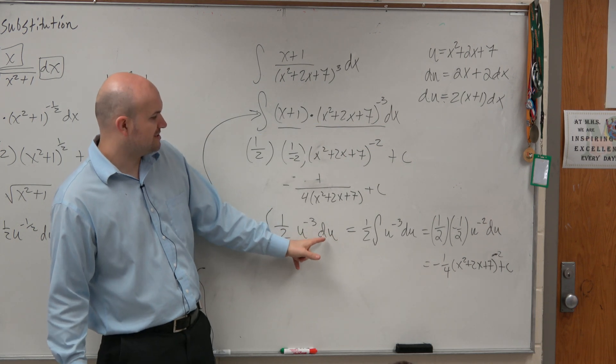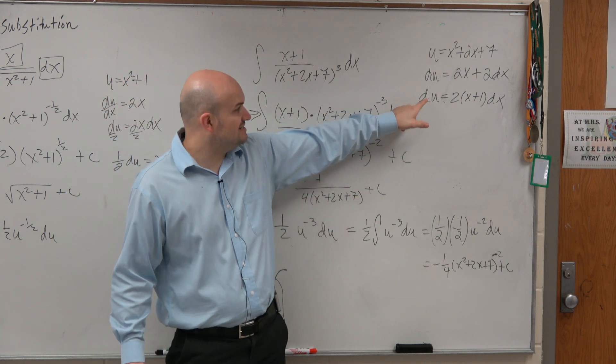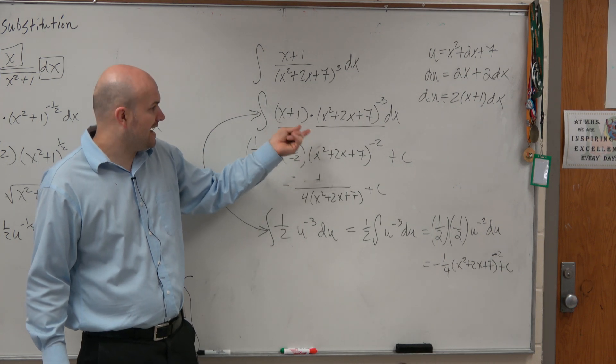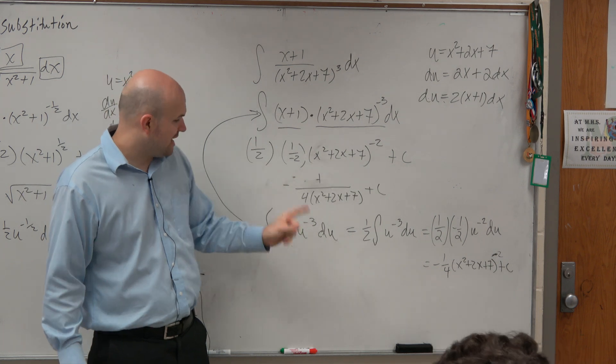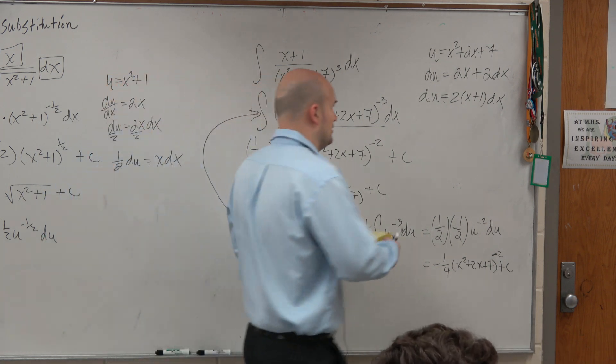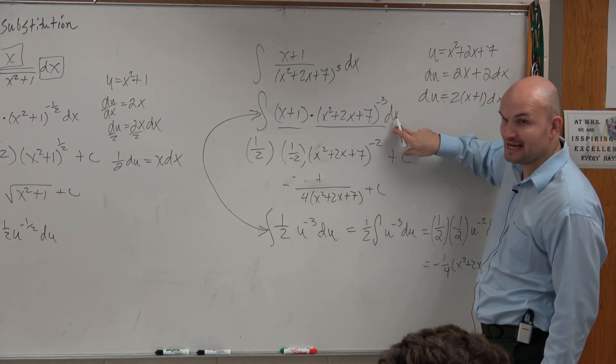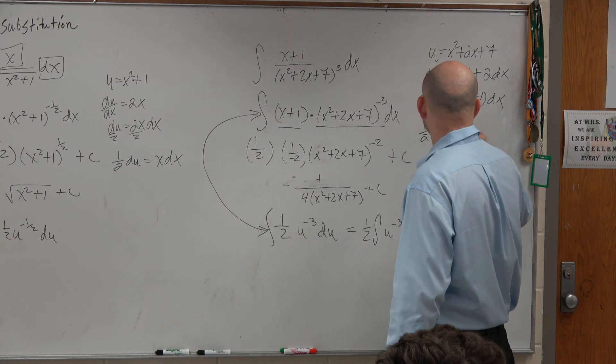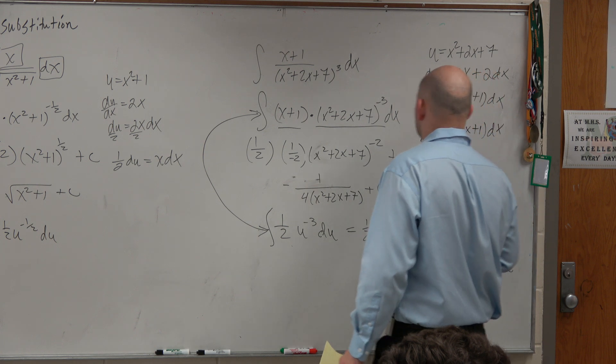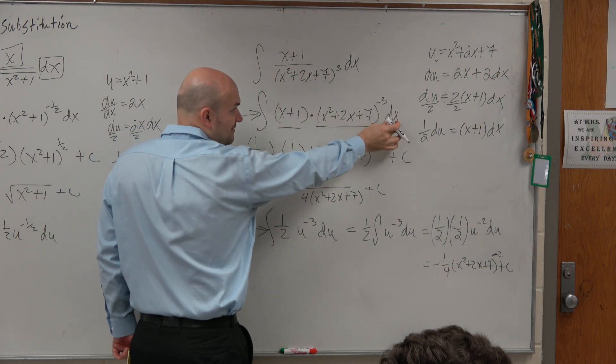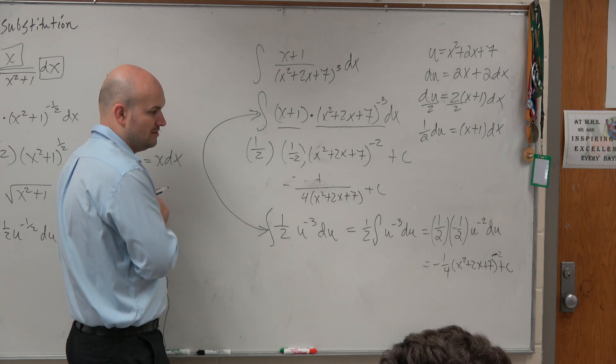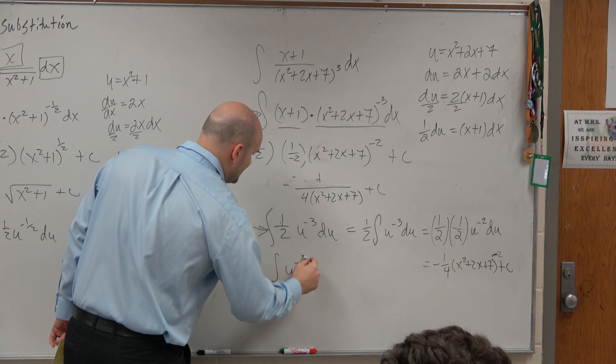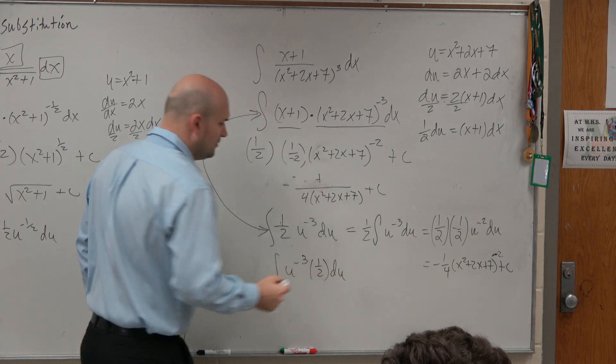You can't just say, oh, I'm just going to write du here. Because look at what du equals. Du equals 2 times x plus 1. We don't have 2 times x plus 1. We only have x plus 1. That is why I have to include that 1 half. Or another way to look at it is if you're replacing the dx, right? You're replacing this dx. Or divide by 2 on both sides. You could say 1 half du is equal to x plus 1 dx. So again, we have an x plus 1 and we have the dx. What is x plus 1 dx equal to? 1 half. 1 half du. I'm just not writing them together because we like to have the constant in front. But if you want me to write them together, I'll write them together.